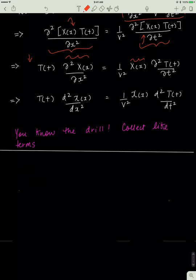Something interesting happened: this derivative only depends on x, and this derivative only depends on t. So each term is now an ordinary differential equation. This is the ordinary differential notation we're used to seeing. All I said is u can be factorized into two components — one that depends on x and the other on t — and then I substituted u with that.